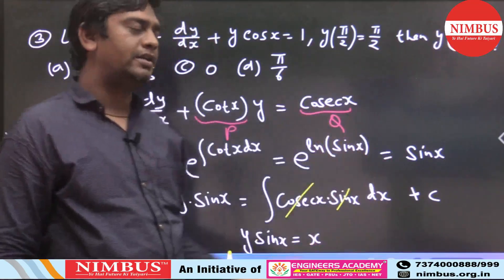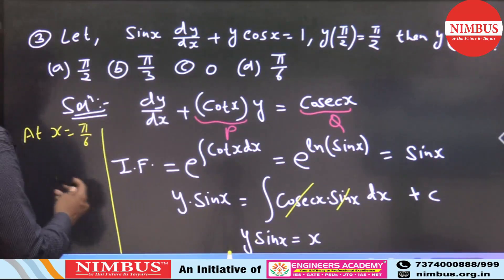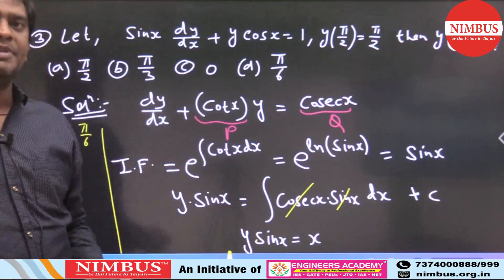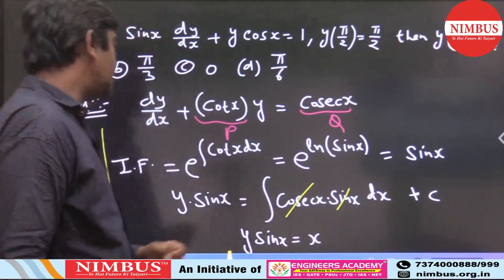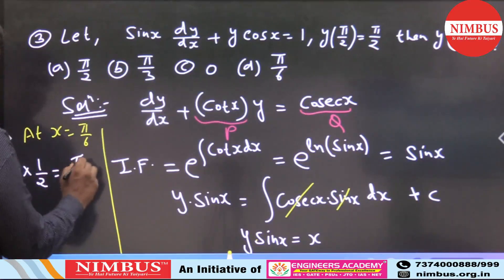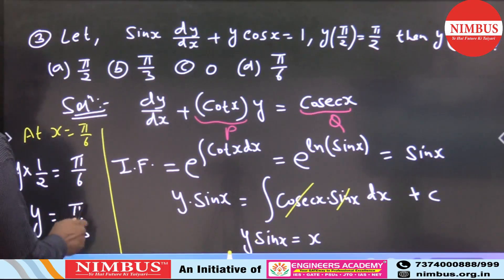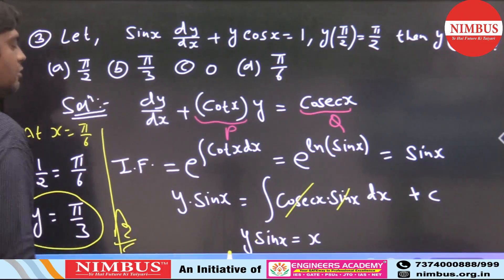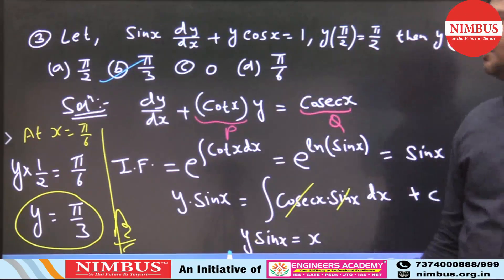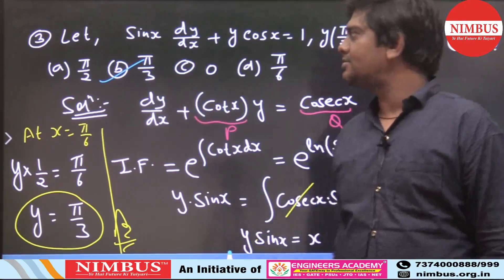We have to find the value at x = π/6. Putting x = π/6 in y·sin(x) = x, we get y·sin(π/6) = π/6. Since sin(π/6) = 1/2, we get y·(1/2) = π/6, so y = π/3. The answer is π/3. These are memory-based options, so please check — the answer is π/3.